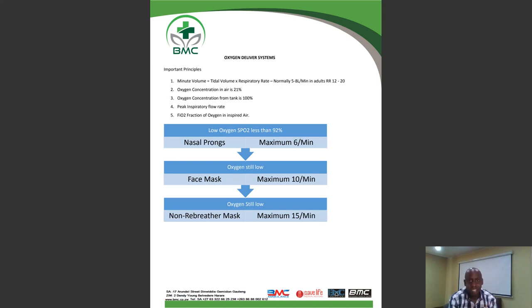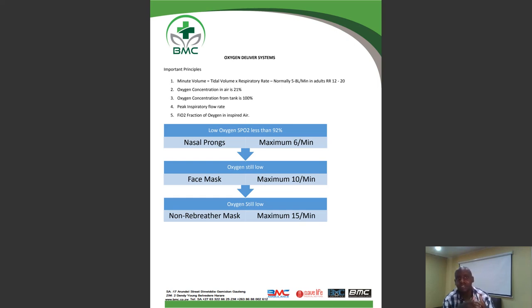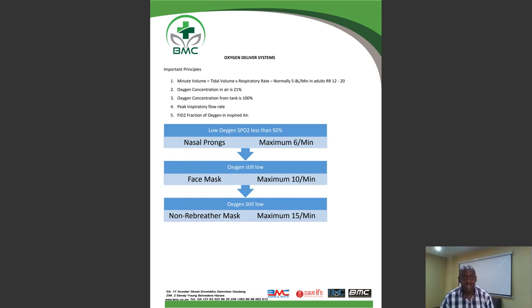It's important for us to know some of the basics in terms of oxygen delivery systems and what we are trying to achieve — even as a refresher for healthcare providers. A bit of physiology: the air we are breathing right now is 21% oxygen, while the air from a device such as a concentrator or oxygen cylinder is almost 100%. When our saturations are low, we are trying to increase oxygen saturation by increasing the fraction of oxygen in the air the patient is breathing.